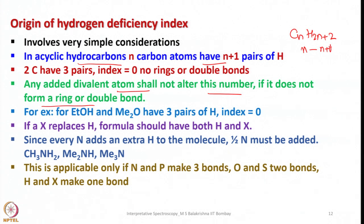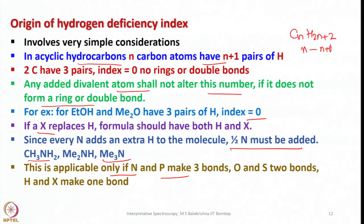If X replaces H, the formula should include both H and X. Since every nitrogen adds an extra H to the molecule, half N must be added — that is why we add N/2 in the formula, as seen in methylamine, dimethylamine, trimethylamine, etc. This is applicable only if N and P make 3 bonds (trivalent), while S and O should make 2 bonds and H and X should make only 1 bond.